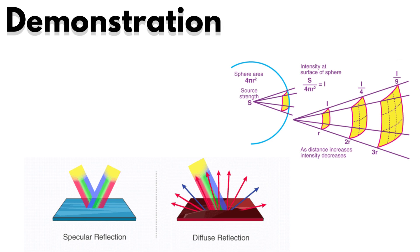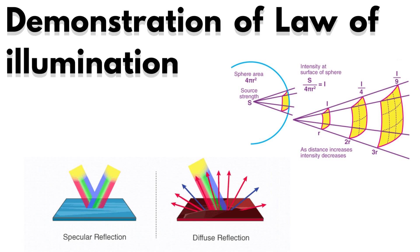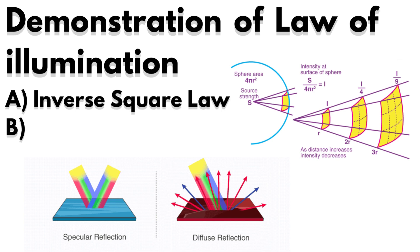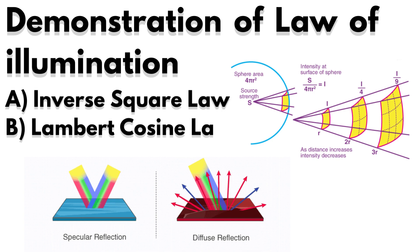In this upcoming video presentation, I will be conducting a detailed and informative demonstration of the fundamental principles governing illumination, with a special emphasis on the inverse square law and the Lambert cosine law. These two laws play pivotal roles in understanding how light intensity varies with distance and angle, making them essential concepts for anyone interested in the science of illumination.